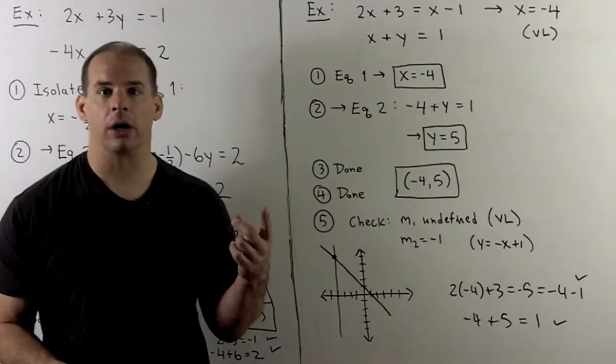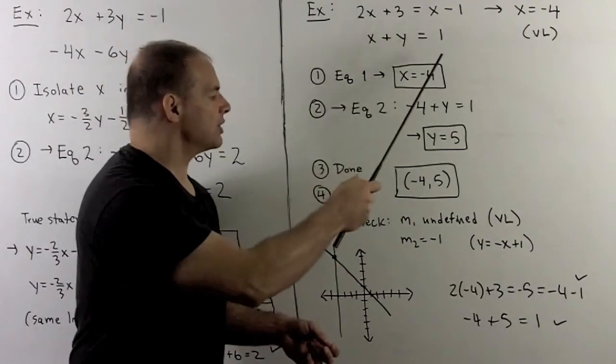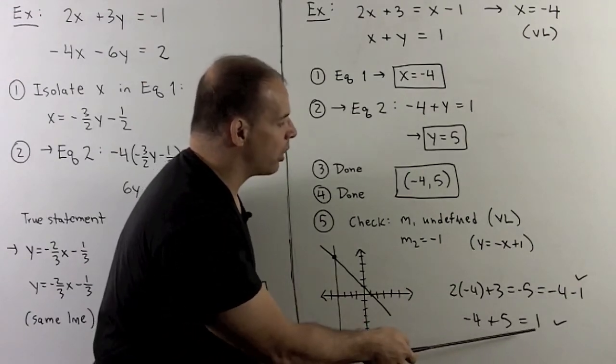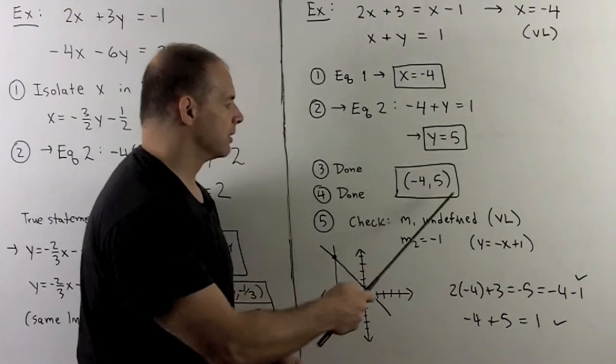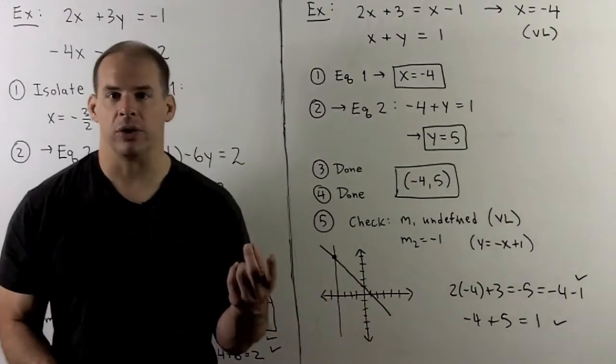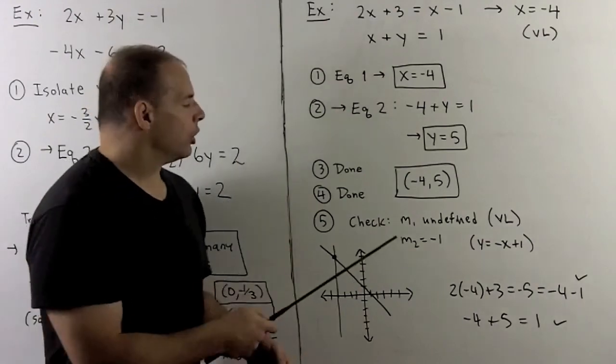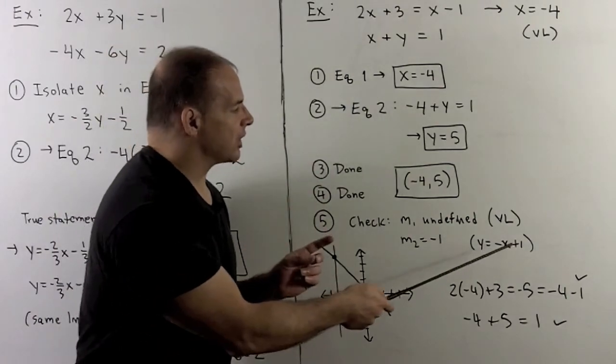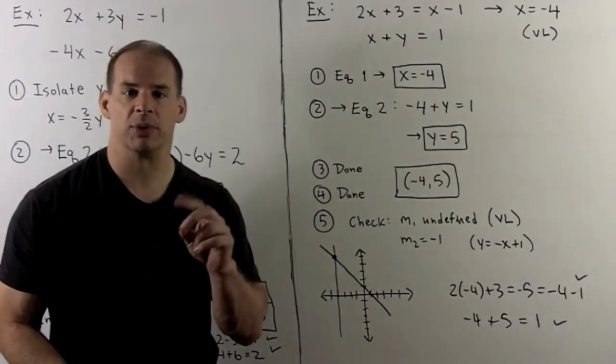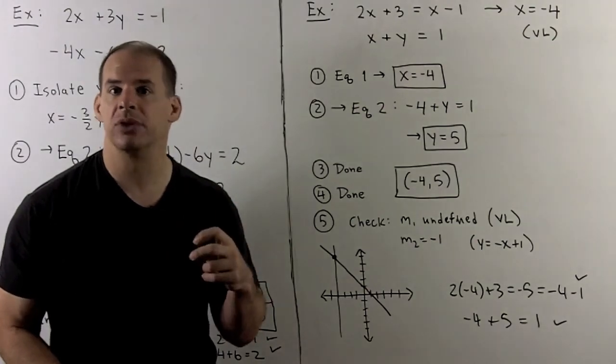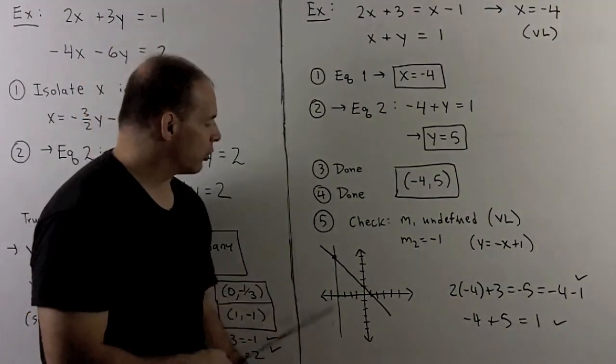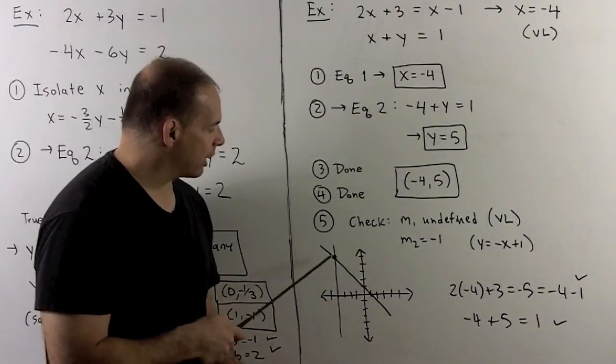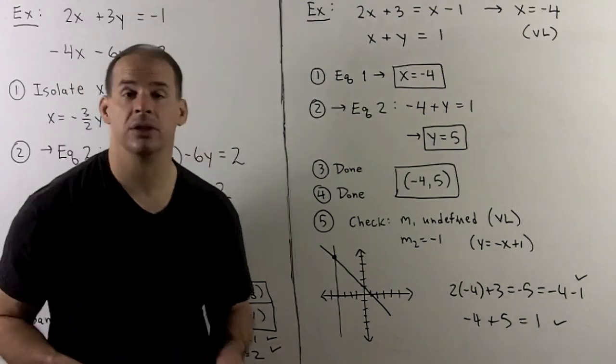Of course, we check our work. We'll put these into the original equations. We work that out. We have this long equation, which works out. Then, I have -4 + 5 = 1, which also works out. So, this checks. We look at the graph, just to review. Note, for our vertical line, slope is undefined. For our second line, y = -x + 1 in slope-intercept form. Slope is -1, so here the slopes are different. So, we have a unique solution. If we graph our lines, we wind up with our point of intersection over here, which is around the (-4, 5) as promised. So, that also checks our work.